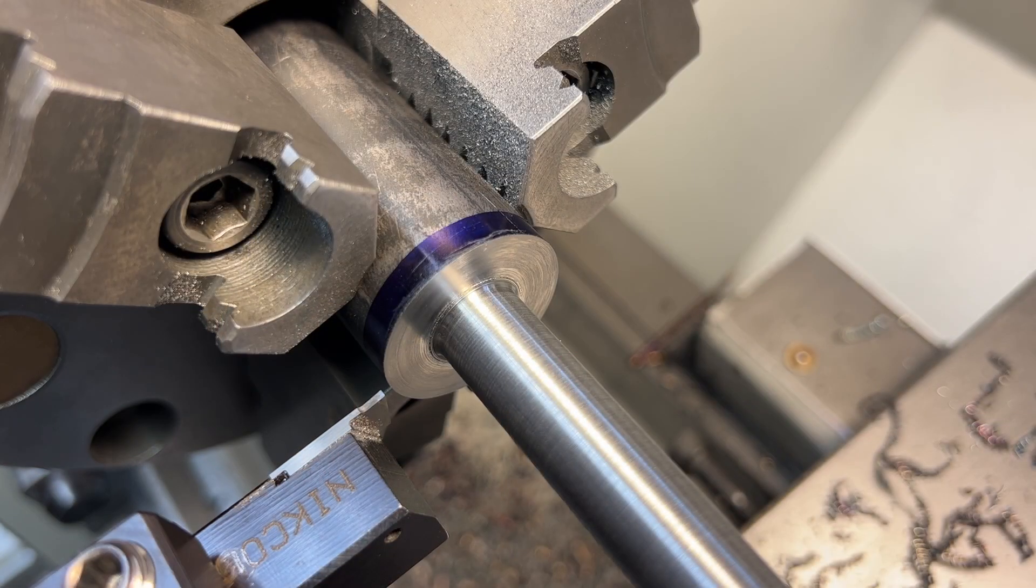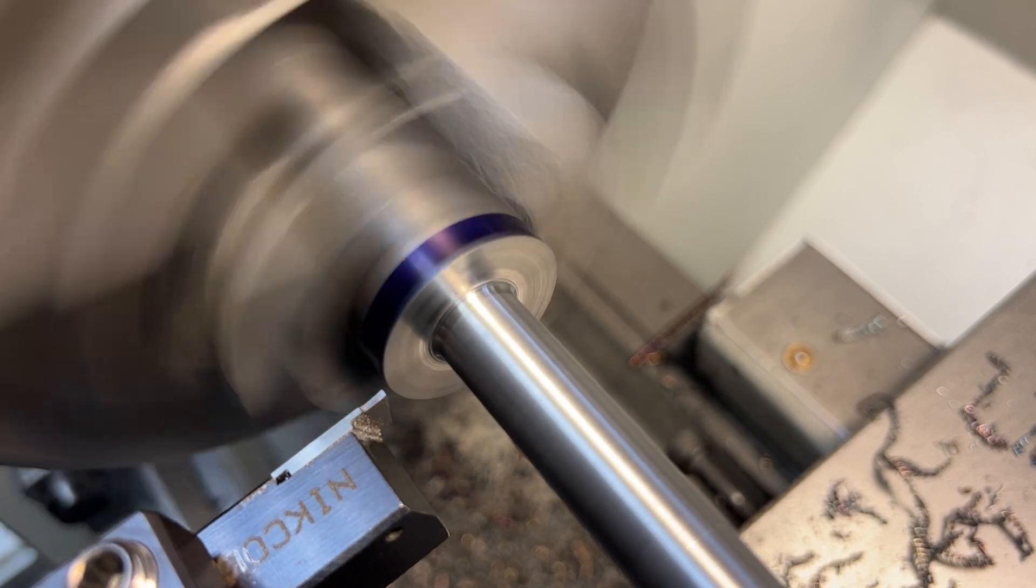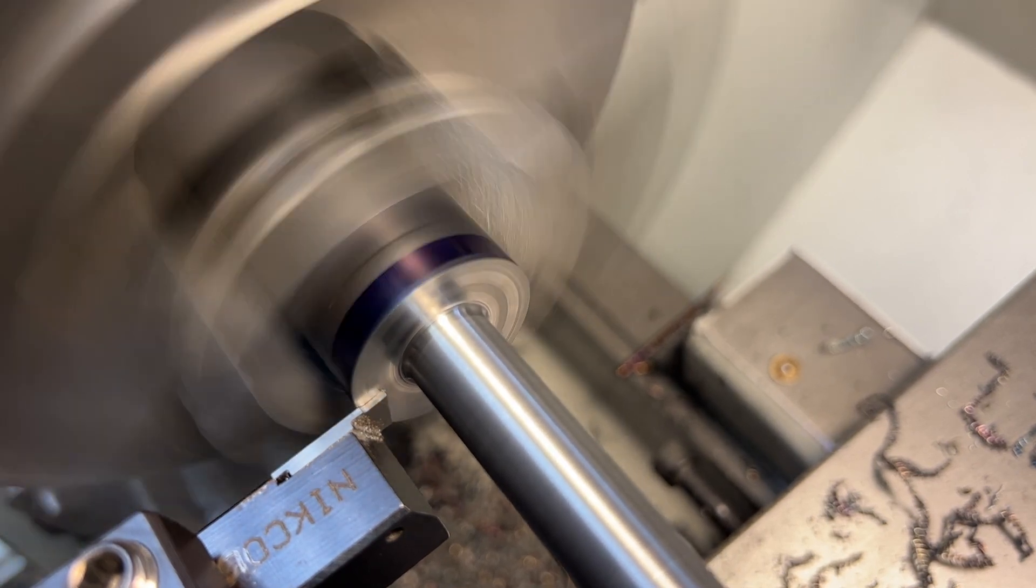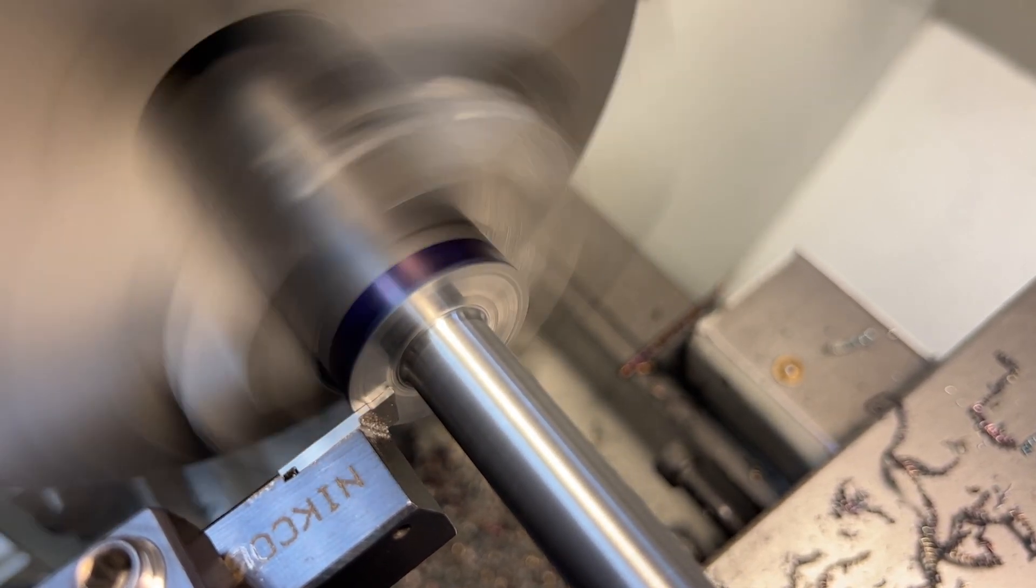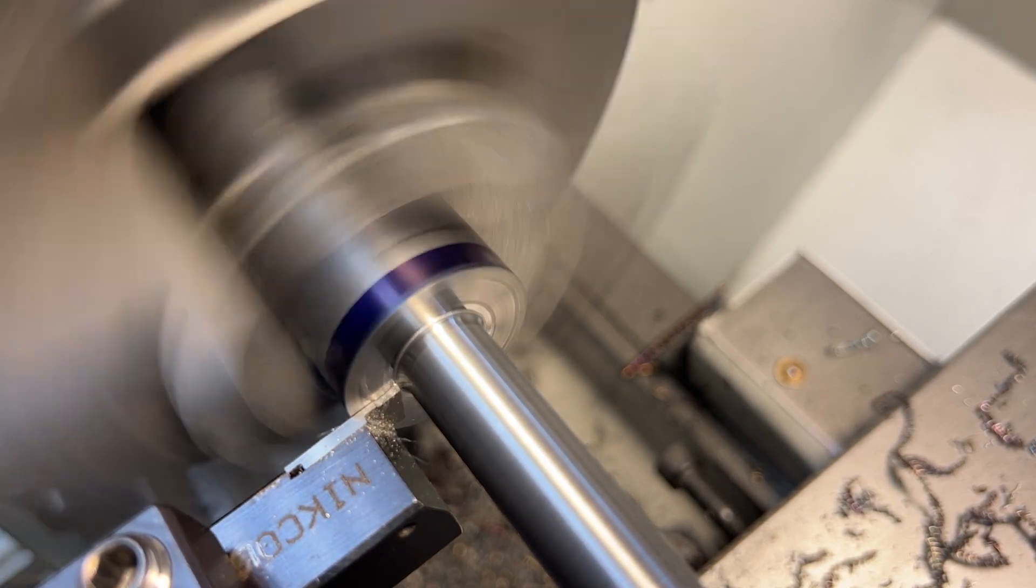Now, because we used that high-speed steel tool with that big nose radius on it, we do have to come back and clean up the radius that's left in this corner here, so that the bearing can sit flush against this shoulder. To do this, we are just using a small carbide grooving tool.